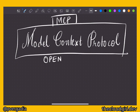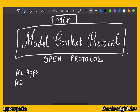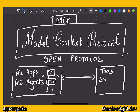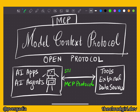MCP, Model Context Protocol, is an open protocol that enables seamless integration between AI applications or AI agents and their integration with the various tools and external data sources they need in order to do the tasks we ask them to do. That connection is what we define as Model Context Protocol — MCP. It's the transport layer and it helps us standardize this connection.